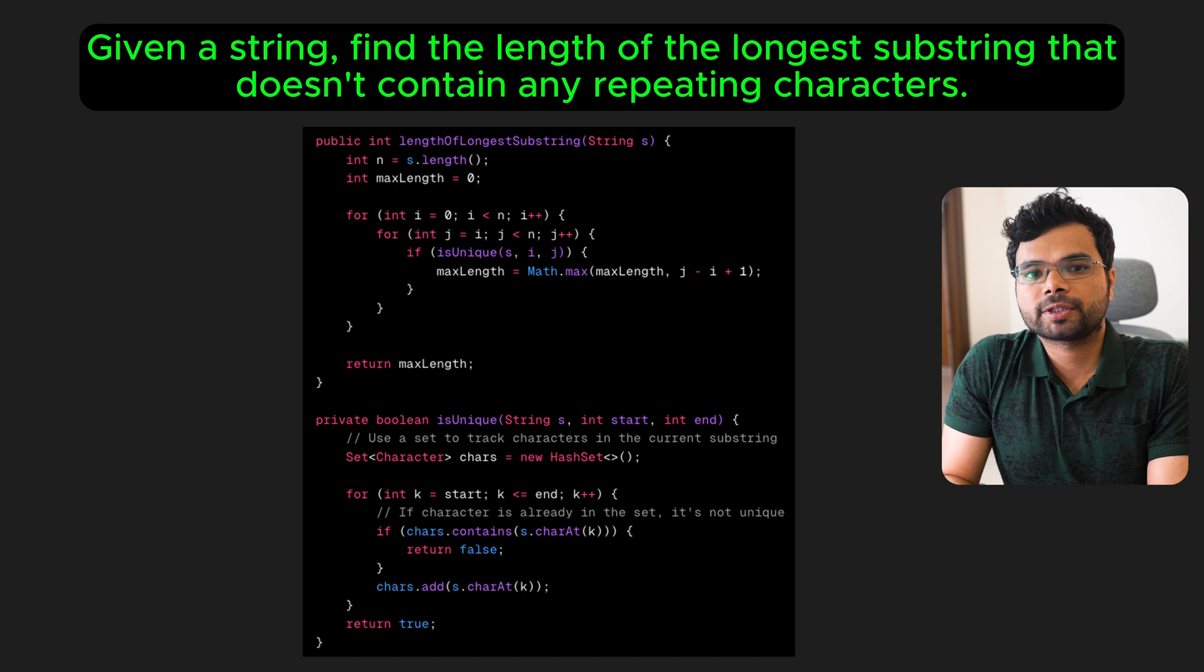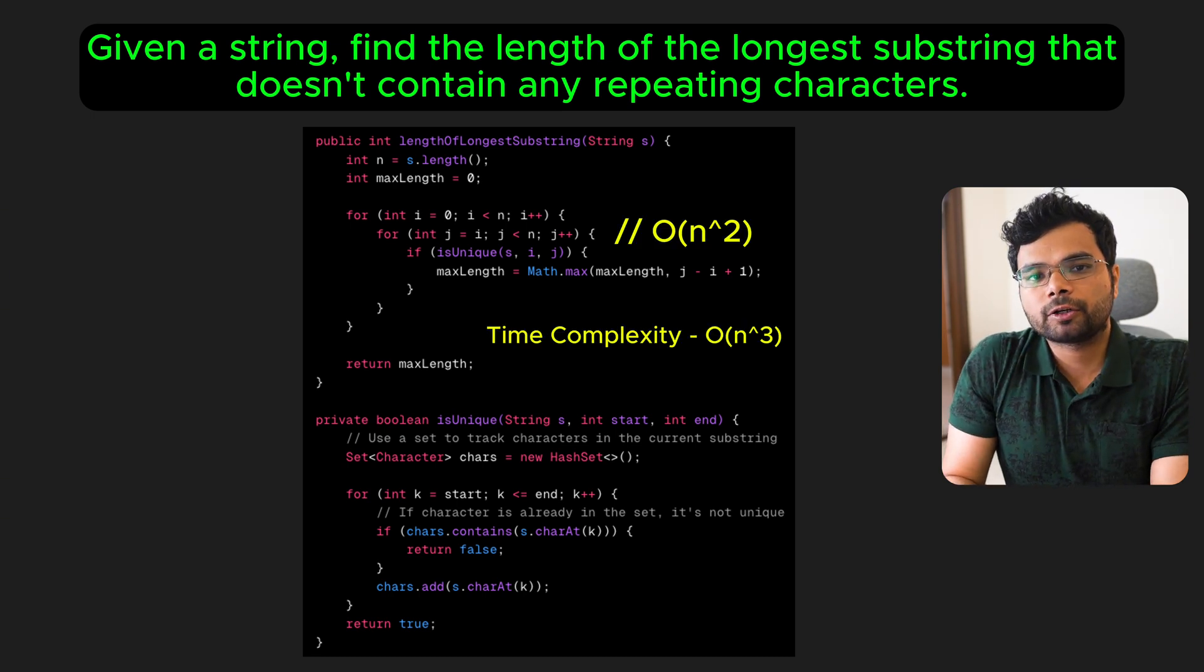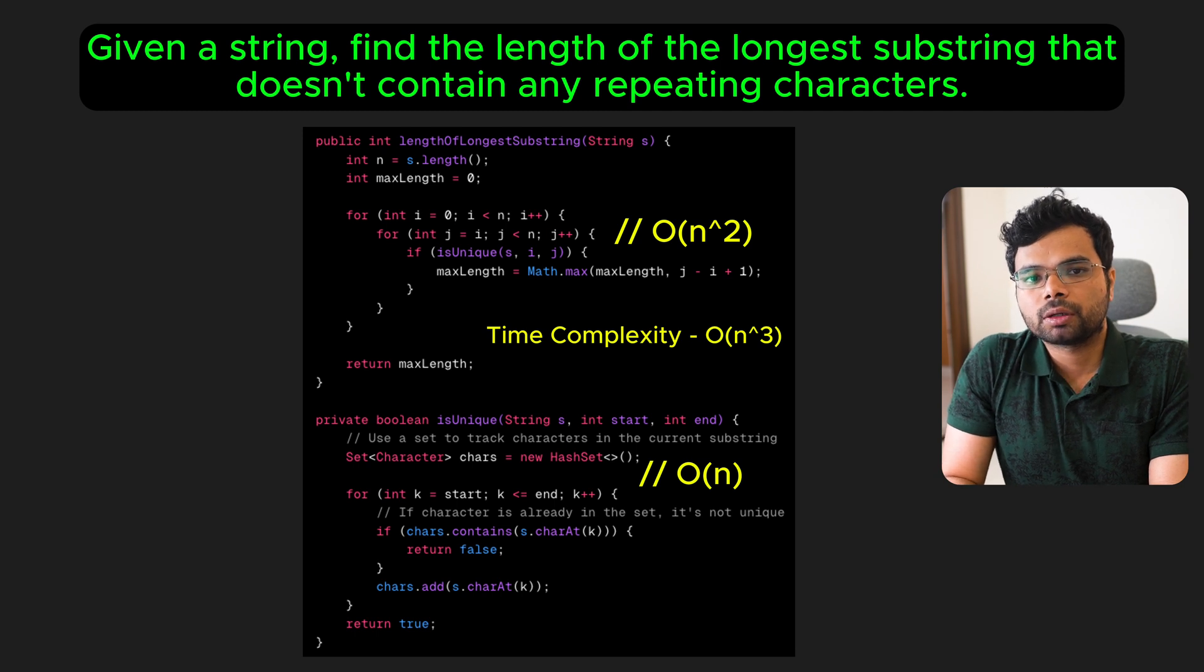The brute force solution involves checking every possible substring and verifying if all its characters are unique. While this approach works, it's highly inefficient with a time complexity of order of n cubed. Order of n squared to iterate through all possible substrings, times order of n to check uniqueness for each substring. This is far too slow for large inputs, mainly because we look through every possible substring.